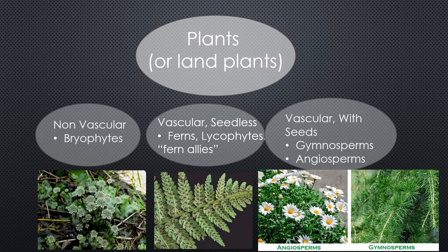You'll need your plant classification chart to organize this. Non-vascular plants are our bryophytes. Vascular seedless plants that produce spores include ferns, lycophytes, and fern allies like whisk ferns. Vascular plants that do produce seeds fall into two categories: gymnosperms and angiosperms.